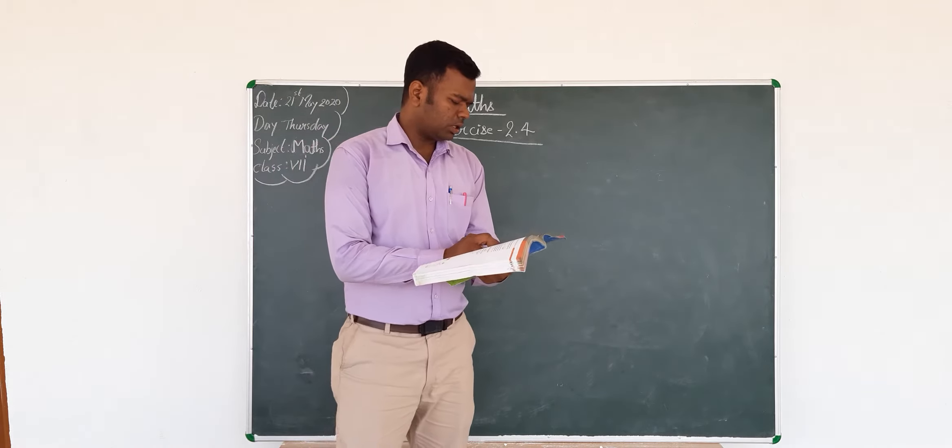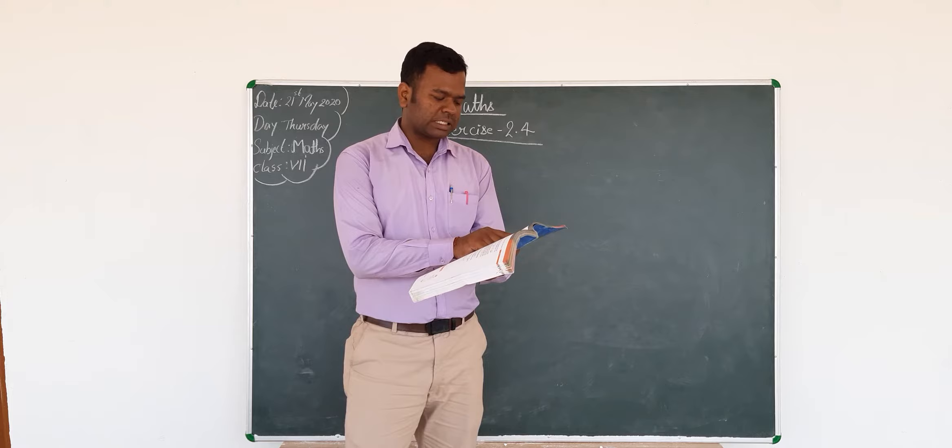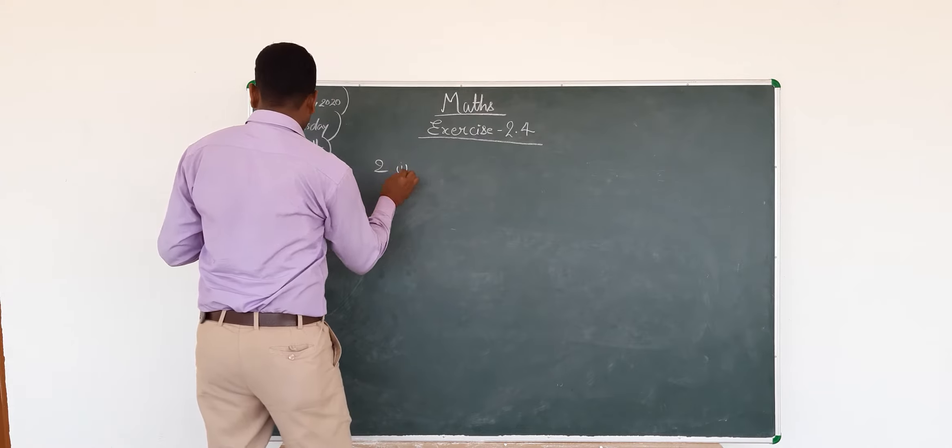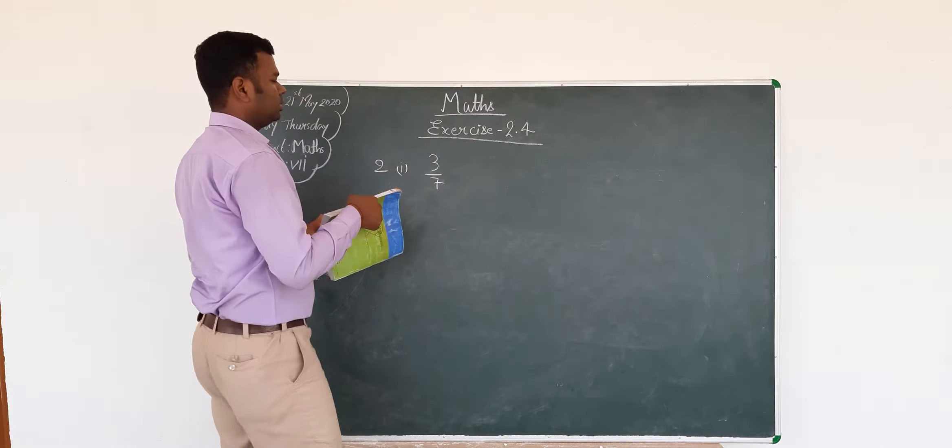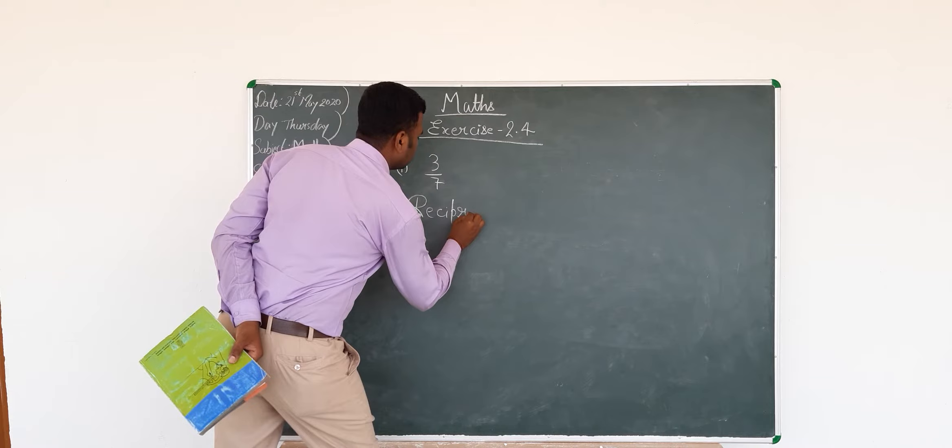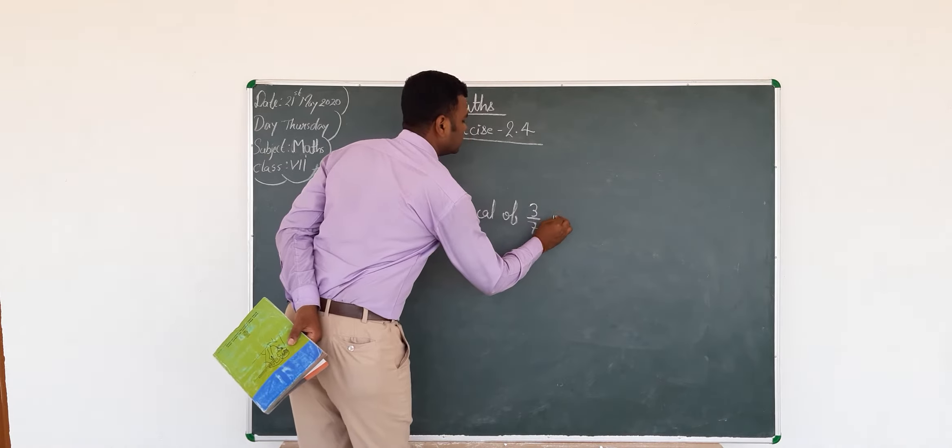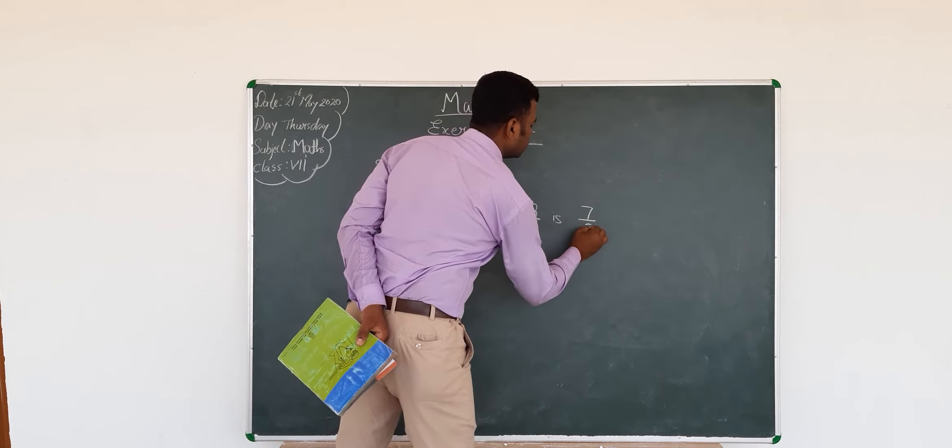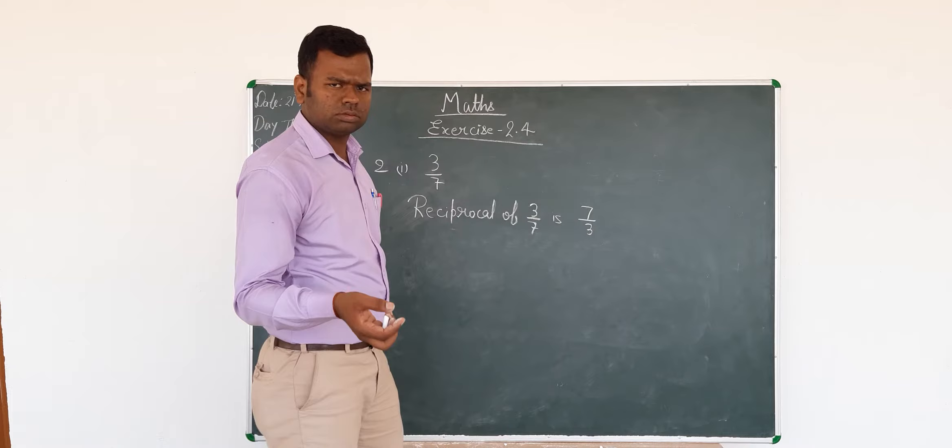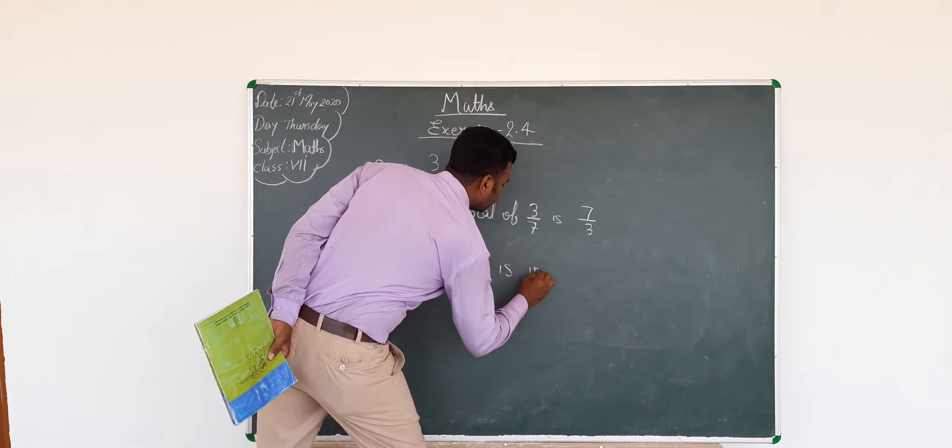We are going to question number 2. Find the reciprocal of the following fractions and classify the reciprocal as proper fraction, improper fraction, or whole number. Part 1 is 3/7. The reciprocal of 3/7 is 7/3. Now you have to decide whether 7/3 is a proper fraction, improper fraction, or whole number. This is an improper fraction.